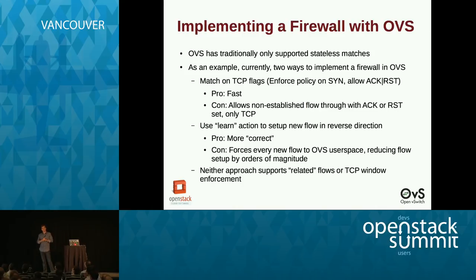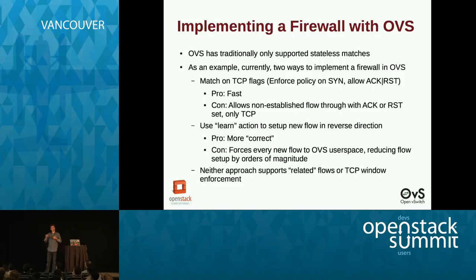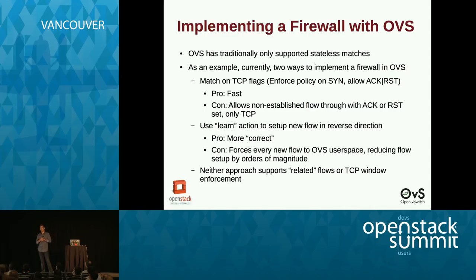Another option, more secure, is that OVS supports a learn action, which allows you to insert new flows into an existing OpenFlow table. When a packet comes in that you want to allow, you look at the ephemeral port — for example, the TCP source port — and create a reverse flow that allows the return traffic through. This works better because you're only allowing previously established connections in. But the problem is it's really slow because you can't do mega flows or wildcarding in the kernel — every new flow has to go to user space, affecting performance by orders of magnitude. Neither of these approaches work with things like allowing FTP data connections through or enforcing the TCP window.